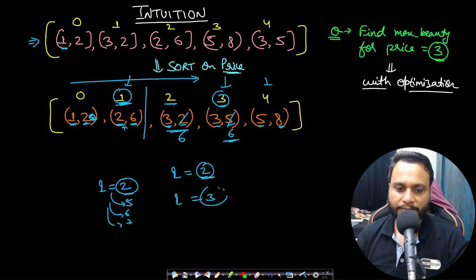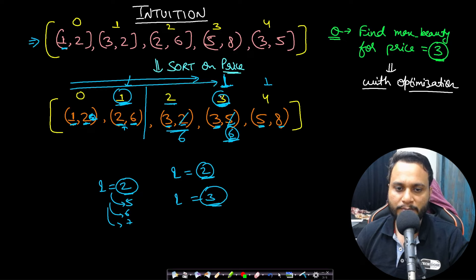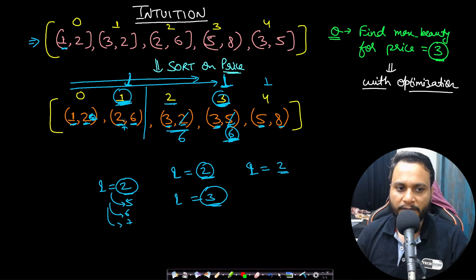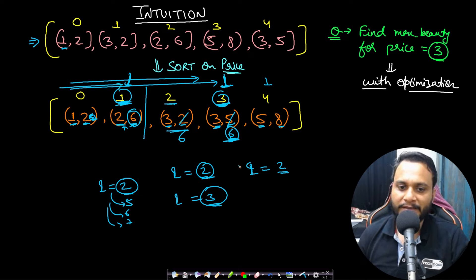Now let's say your query equals 3. Applying binary search, we stop at index 3, which has price less than or equal to 3 and is the last valid index. We simply look up the prefix max beauty value 6, meaning 6 is the maximum beauty from the beginning to that point. For query equals 2, binary search stops at index 1 (price 2), and we return value 6. So binary search combined with maintaining the prefix max beauty allows us to solve this problem optimally.